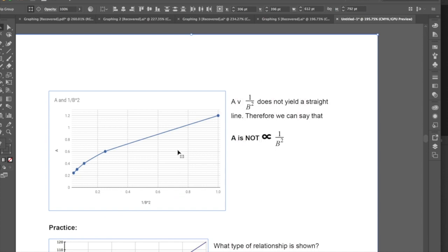Whereas, again, to reiterate, 1 over b squared, because this is a curved line which doesn't really seem to be following any sort of linear pattern, it would be hard to relate a over 1 over b squared, because there's no straight line yield.